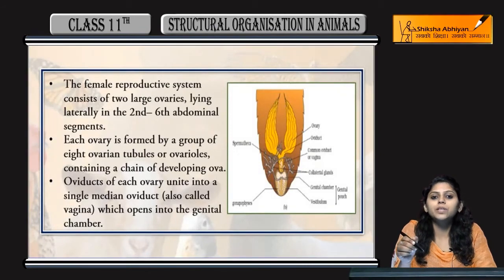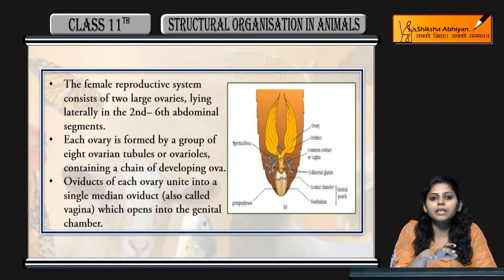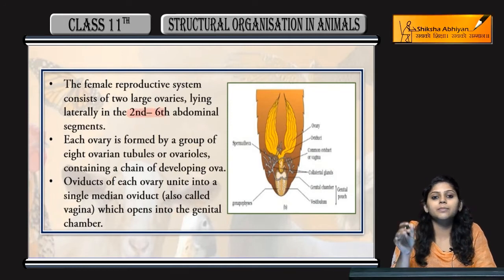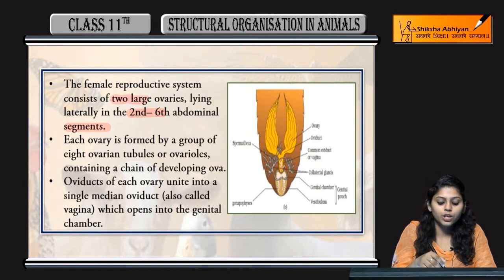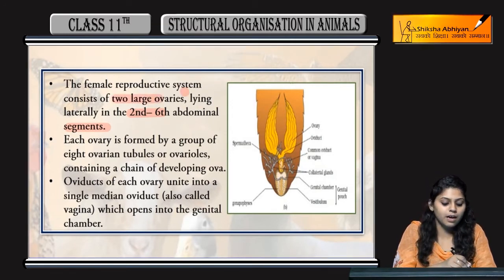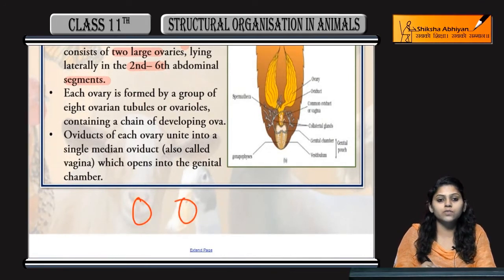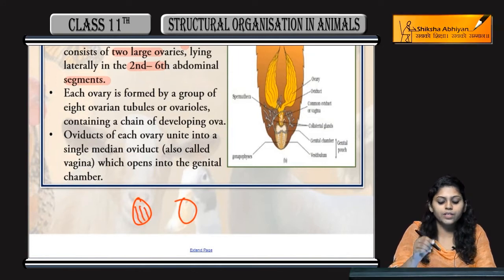Now coming to the female reproductive system of cockroaches. The female reproductive system spans from the second to sixth abdominal segment where the ovaries are present. Two large ovaries are present in this region; each ovary is formed by eight ovarian tubules.